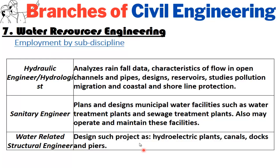Employment sub-disciplines for water resources engineering include: hydraulic engineer or hydrologist, who analyzes rainfall data, characteristics of flow in open channels and pipes, designs reservoirs, studies pollution migration, and handles coastal and shoreline protection; sanitary engineer, who plans and designs municipal water facilities such as water treatment plants and sewage treatment plants, and may operate and maintain these facilities; and water-related structural engineer, who designs projects such as hydroelectric plants, canals, docks, and piers.